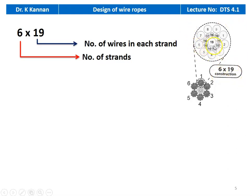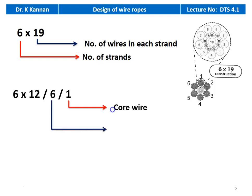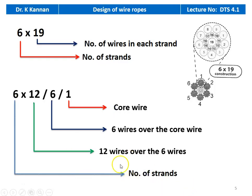Each strand will have 19 wires: nine wires on the outer circle, nine wires on the inner circle, and one wire at the center — this is six by 19. There is another way of designating the wire: six by 12/6/1, where the first six stands for number of strands, 12 stands for 12 wires over the six wires, and six wires over the core wire. So the notation 6 × 12/6/1 means: one core wire, six wires around it, and 12 wires around those. For six by 19, the 19 may be written as 9/9/1: outer nine, inner nine, and center one.